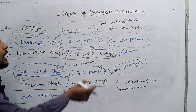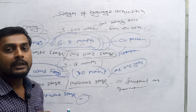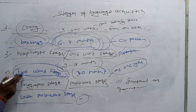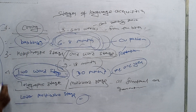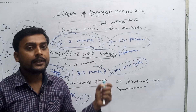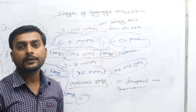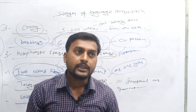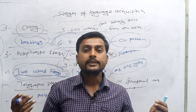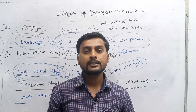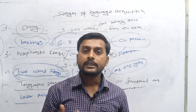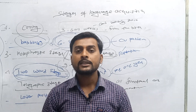So this was all about the stages of language acquisition. We mainly divided them into one, two, three, four, five, six stages — there are totally six stages for learning a language. And when we come to Jean Piaget's stages of language acquisition, I will discuss that in the next video.